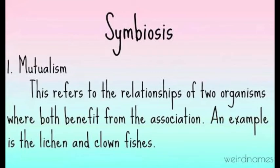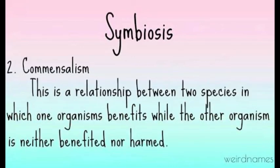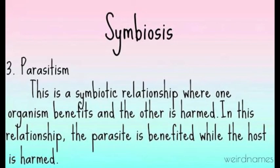Mutualism refers to the relationship of two organisms where both benefit from the association. An example is the lichen and clownfish. Commensalism is a relationship between two species in which one organism benefits while the other is neither benefited nor harmed. Parasitism is a symbiotic relationship where one organism benefits and the other is harmed — the parasite is benefited while the host is harmed.